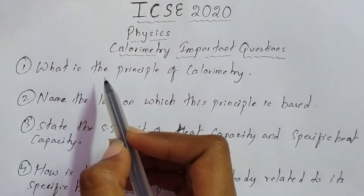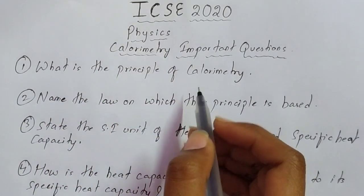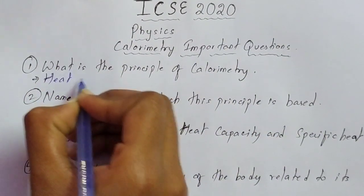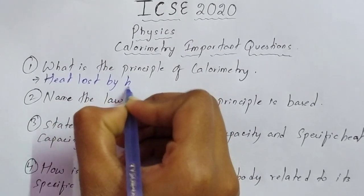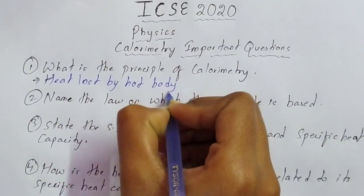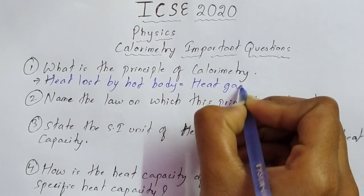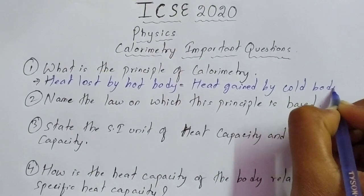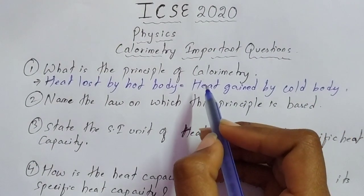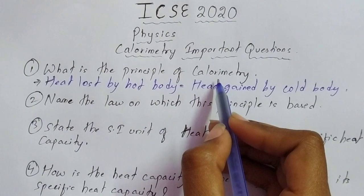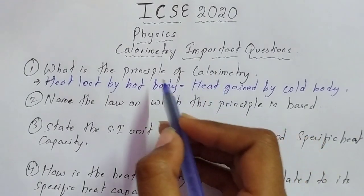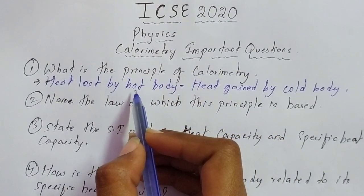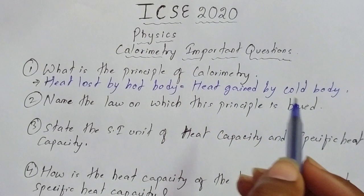The first question is: what is the principle of calorimetry? The principle of calorimetry is that heat lost by a hot body is equal to heat gained by a cold body. You must also remember that the principle of calorimetry is also called the principle of mixtures, so don't get confused. If you are asked what is the principle of mixtures, the answer is the same: heat lost by hot body is equal to heat gained by cold body.